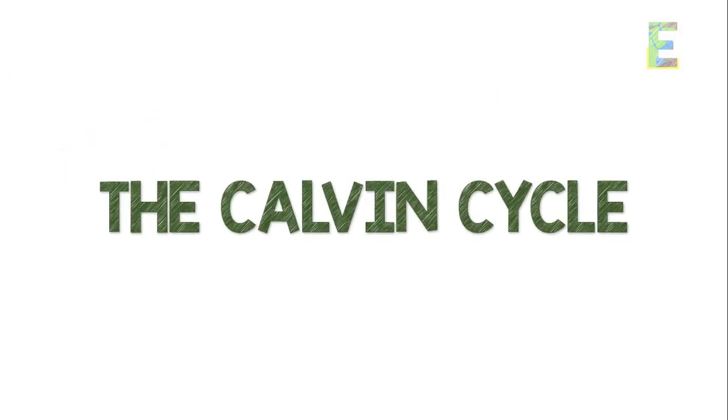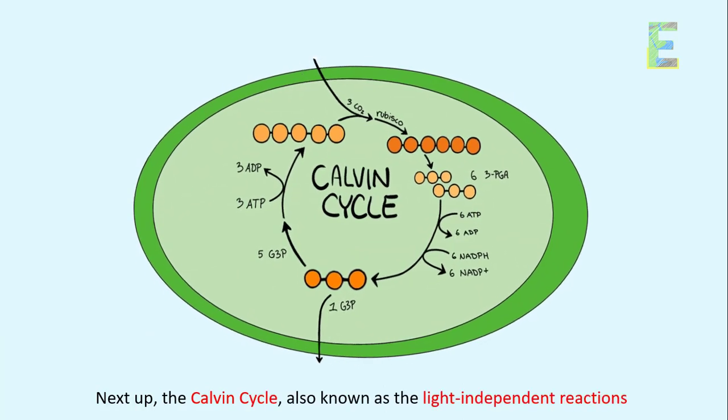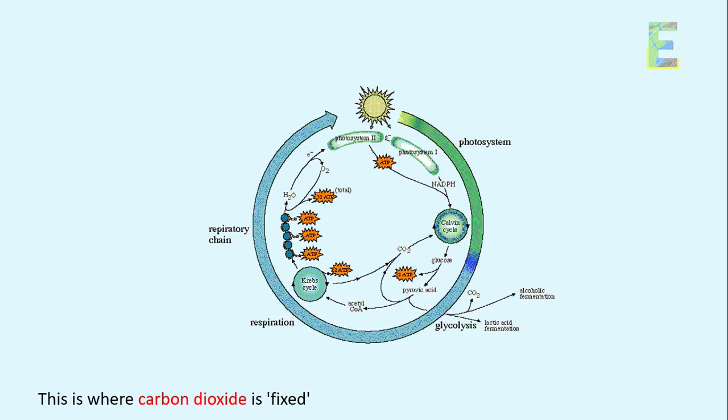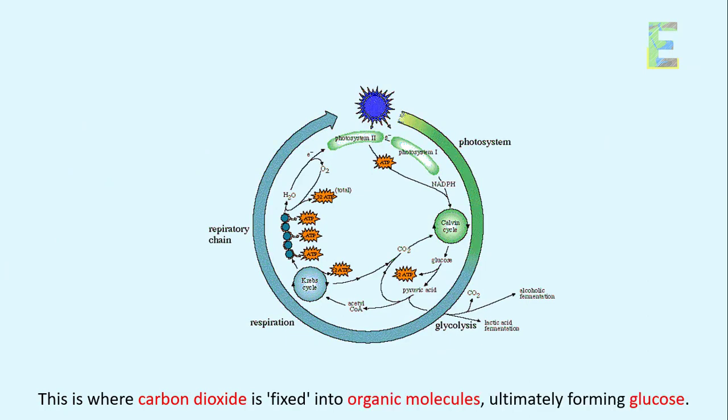The Calvin cycle. Next up, the Calvin cycle, also known as the light-independent reactions. This is where carbon dioxide is fixed into organic molecules, ultimately forming glucose.